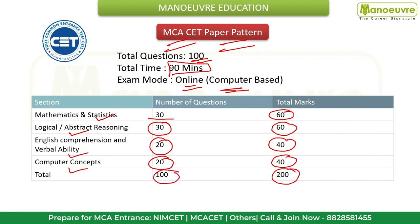Regarding competition, every year 45,000+ aspirants appear for the Maharashtra MCA CET entrance exam, and the cutoff varies depending on the number of applicants and the difficulty level of the paper. So gear up and start your MCA CET preparations early in order to achieve a good score in the first attempt.